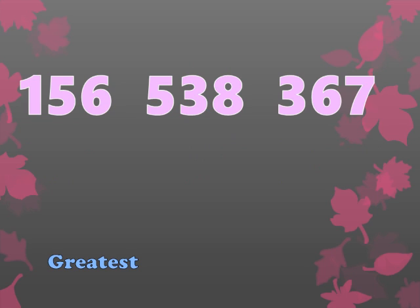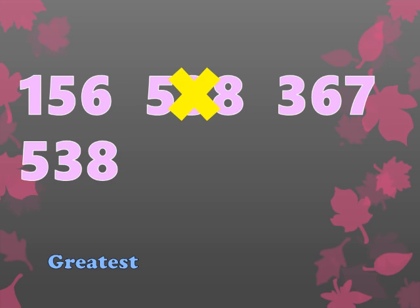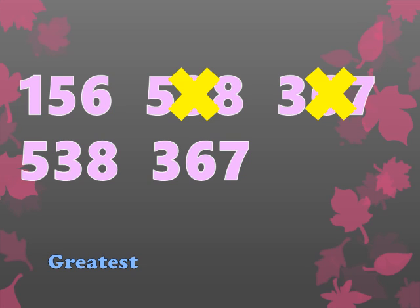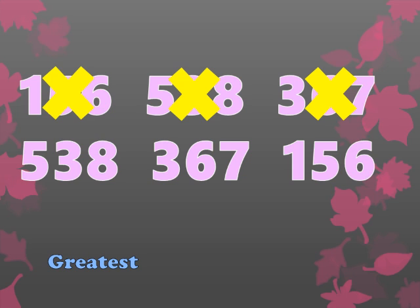Now let's take another example. Again we have three three-digit numbers and we have to arrange them beginning with the greatest. Compare the hundreds place: in the first it's one, in the second it's five, and in the third it's three. Since five is the greatest, cross out 538 and write it first. Now compare 156 and 367 — the hundreds digit is one in the first and three in the last. Since three is greater than one, cross out 367 and write it. What's left is 156, so cross out 156 and write it. We have arranged the numbers from greatest to smallest. Notice we didn't need step two because the hundreds digits were all different.